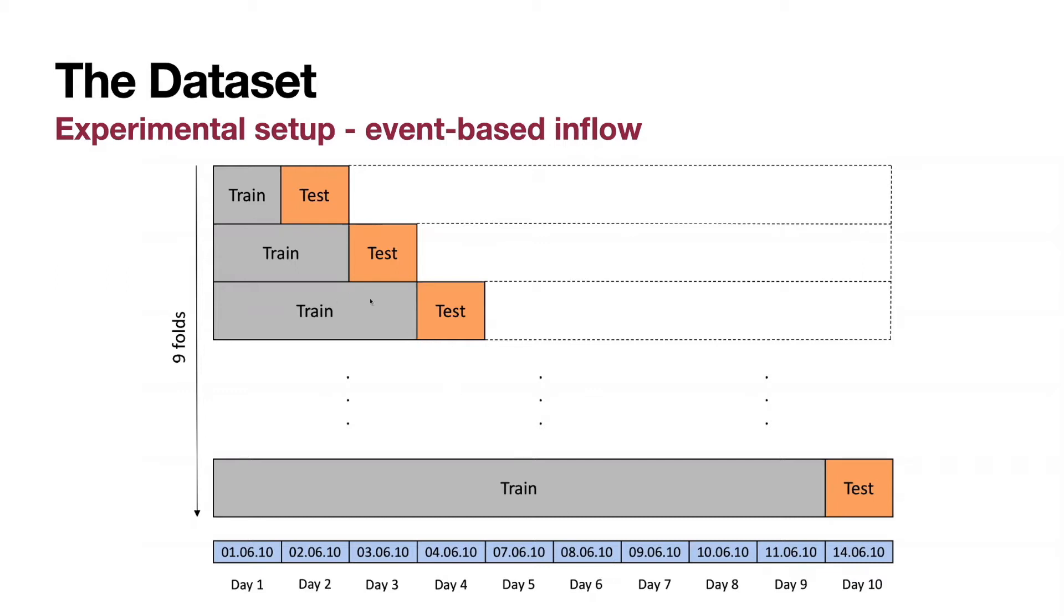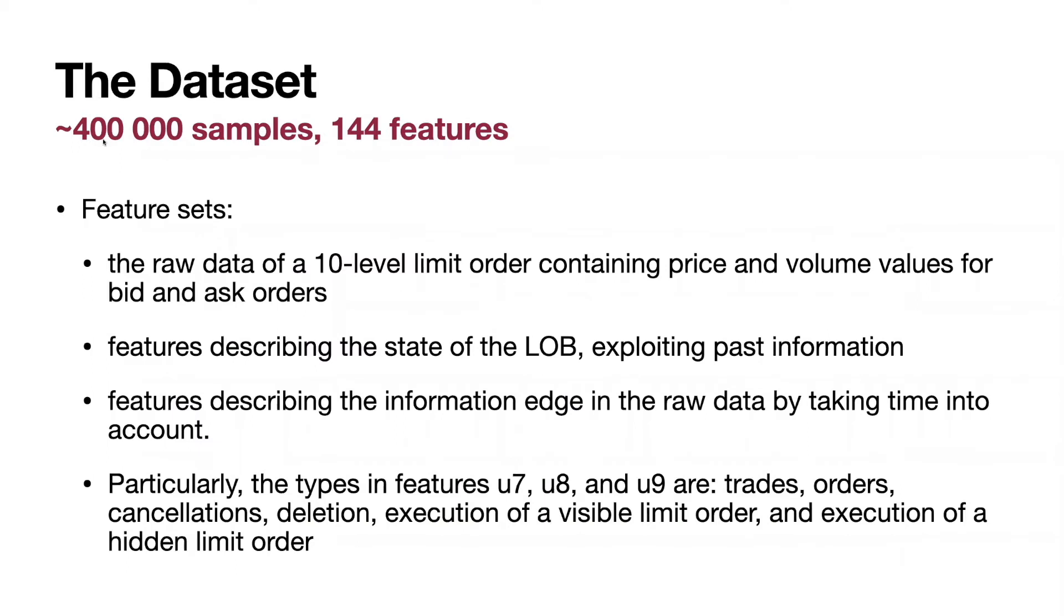Then you calculate your metrics based on average performance of your model on all of the test subsets. There were 400,000 samples, 144 features. The feature sets were the following.